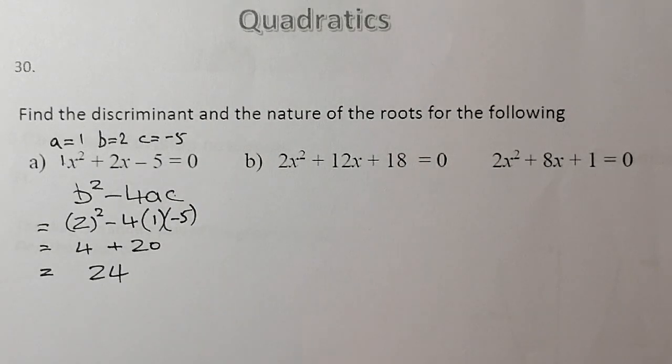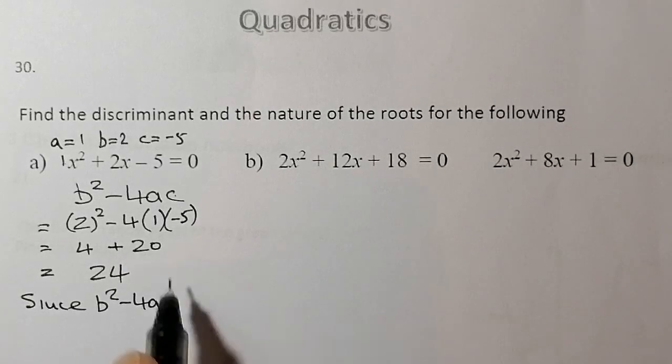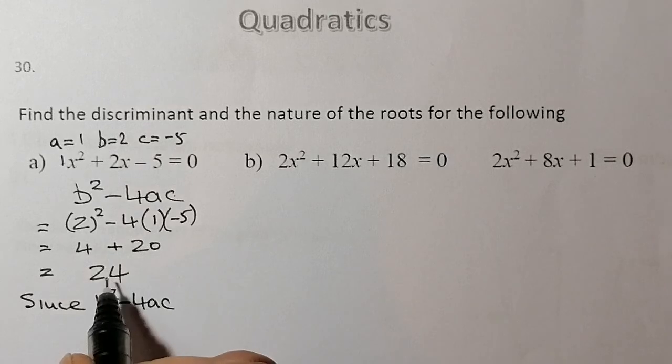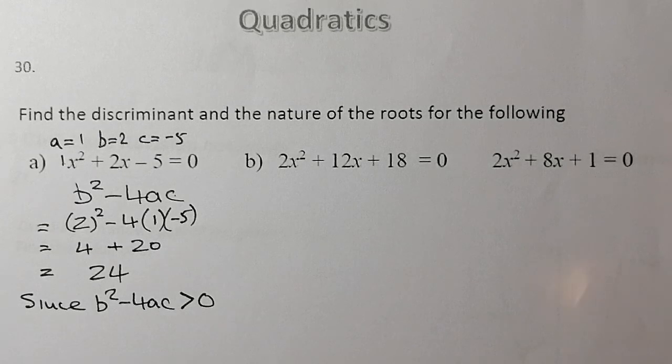So because that number's positive, I'm going to write since b² - 4ac, that was the thing we're trying to find out, the discriminant. Because that number there is bigger than 0, so it's a positive number, it's greater than 0, what I'm going to write down is that there are two real and distinct roots.